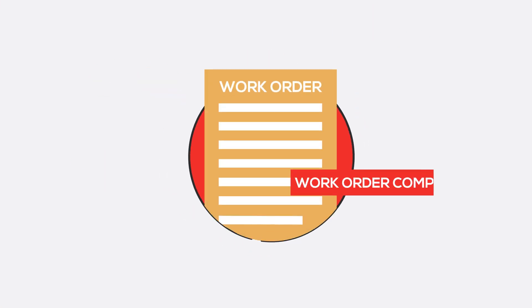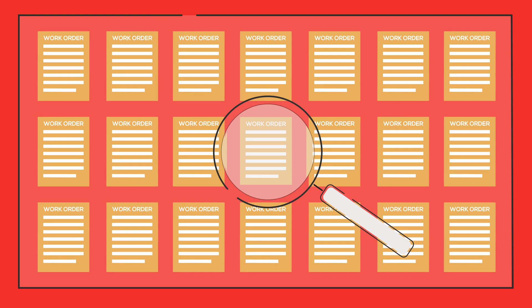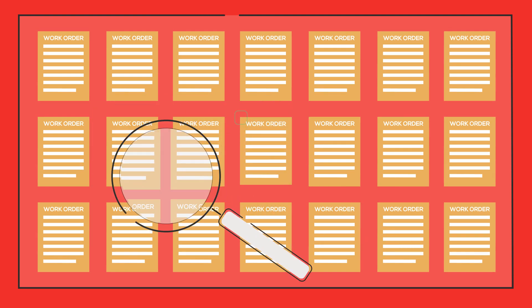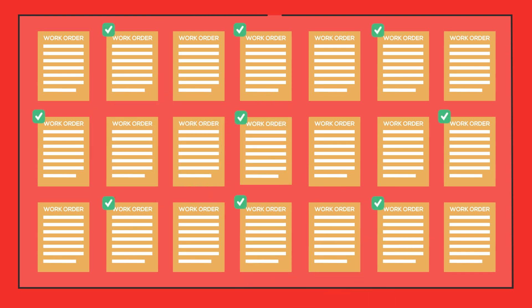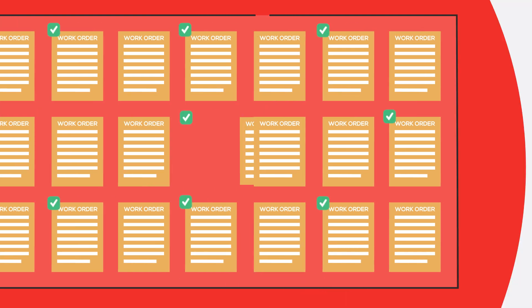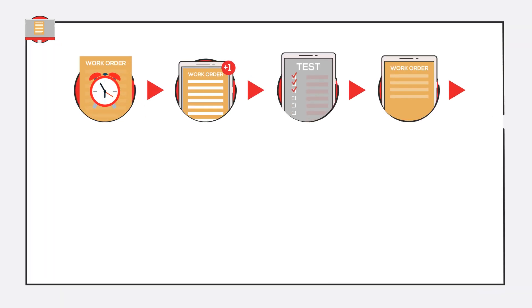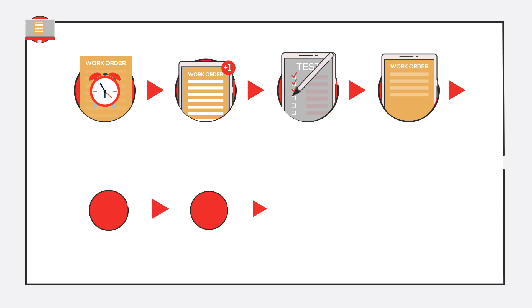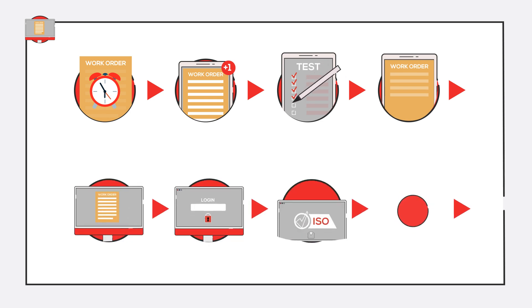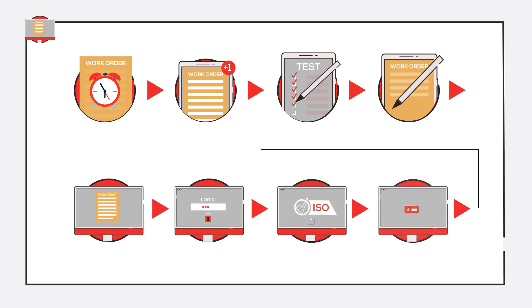At this point, the work order is complete and ready for our internal review. Once the tests have been approved, they will show up on the Calvault Portal, along with the related work order and invoice. With Calvault, maintaining equipment to ensure they are always operating at peak performance has never been easier.